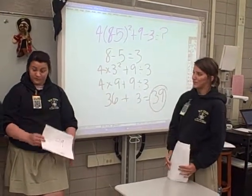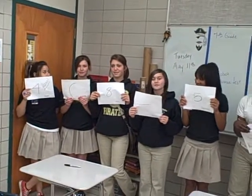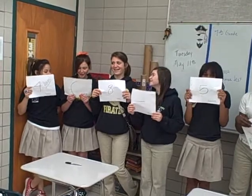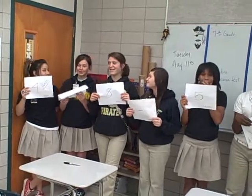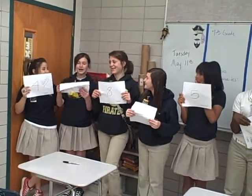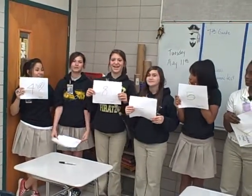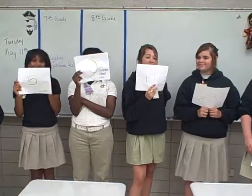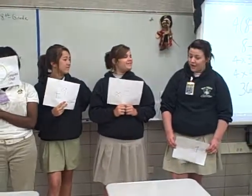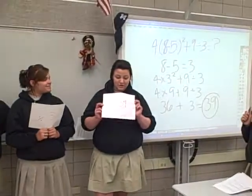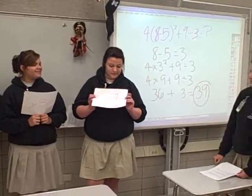So your solution is four times the sum of eight minus five plus nine equals thirty-nine.